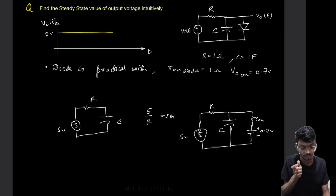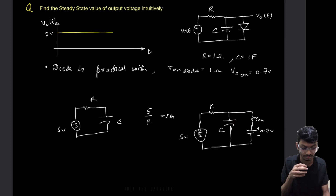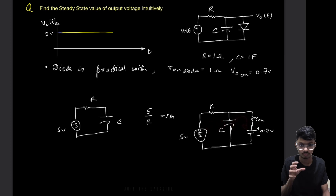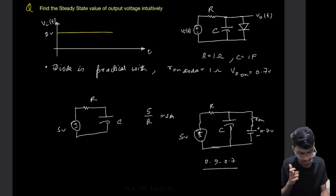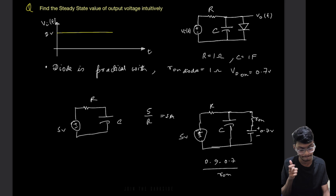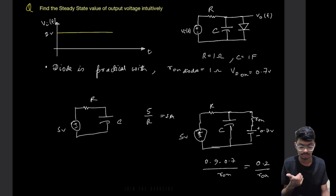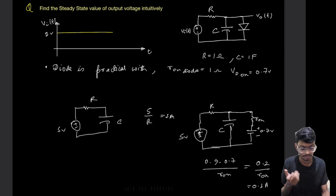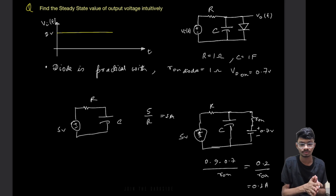Slowly the voltage across the capacitor will increase beyond 0.7V, so the current through the diode branch will also increase. For example, if the cap reaches 0.9V, the diode current will be (0.9 - 0.7) / Ron = 0.2 / 1 = 0.2A. The capacitor keeps charging further.